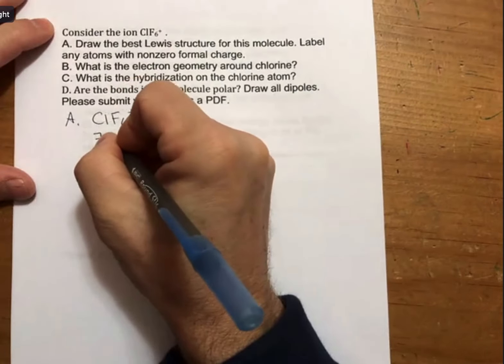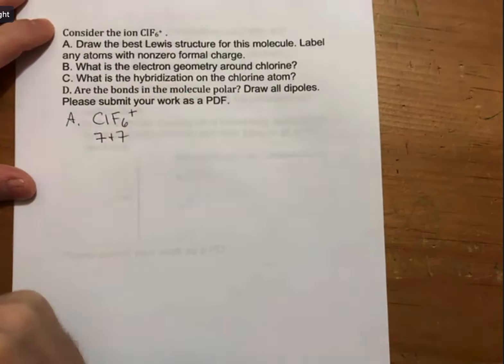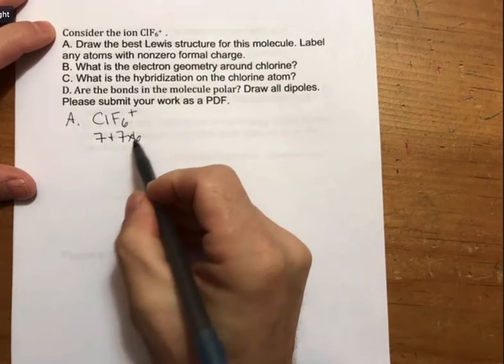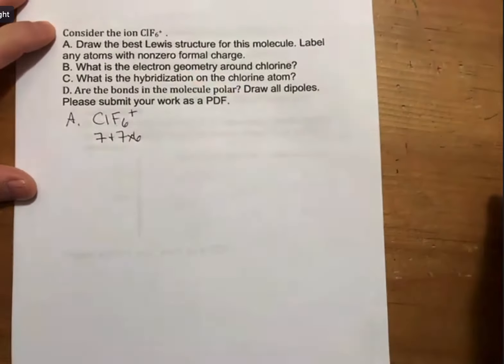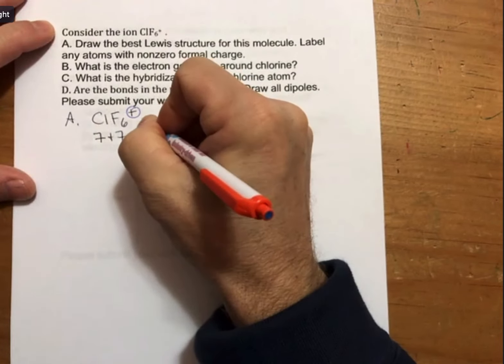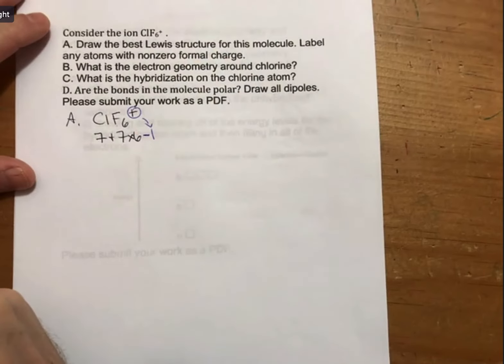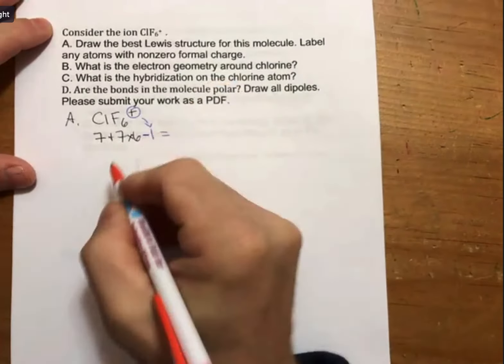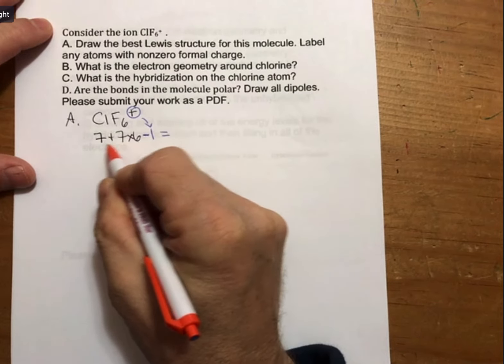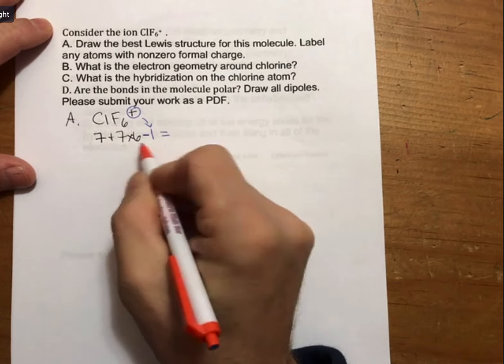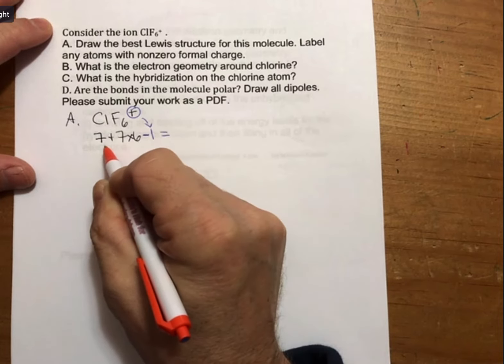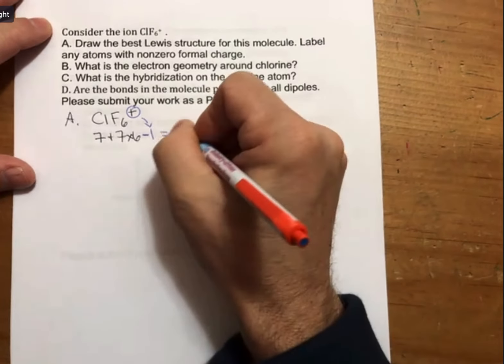We know that we have 7. We know that each chlorine has 7 and there are 6 of them. And because there's a plus charge, we have to subtract 1 electron. So 42, 6 times 7 is 42, plus 7 is 48, minus 1, or 49, sorry, minus 1 is 48.